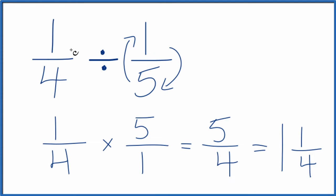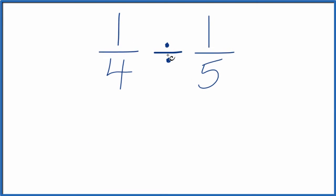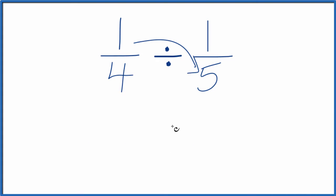There is another way we can divide 1/4 by 1/5. Let's try that. We could multiply 1 times 5, that gives us 5, and 4 times 1, that gives us 4.